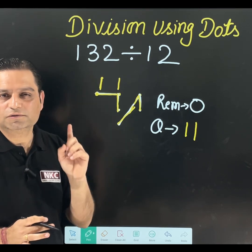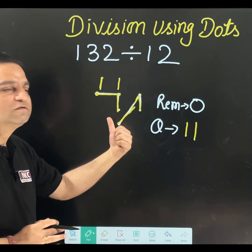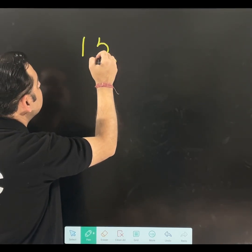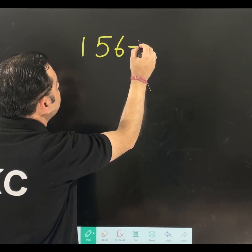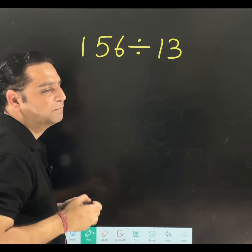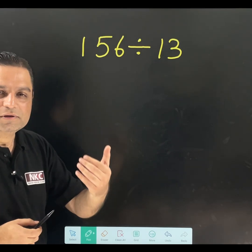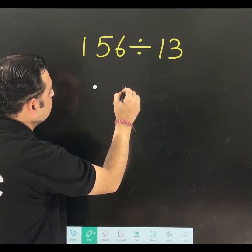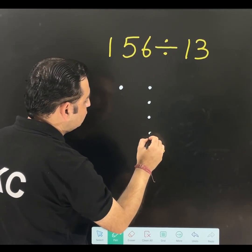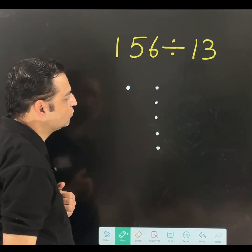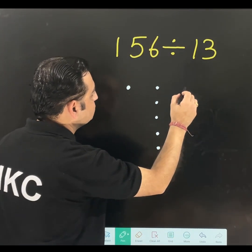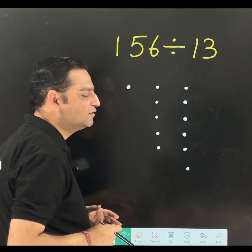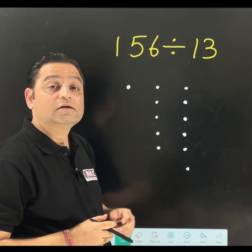I am doing 1 more question. You will get more idea how this quotient is selected. Let us try out one question where 156 is to be divided by 13. Let us start making the dots. 156 means 1 dot. 5 means 5 dots. 1, 2, 3, 4, 5. So, total 6 dots we have.